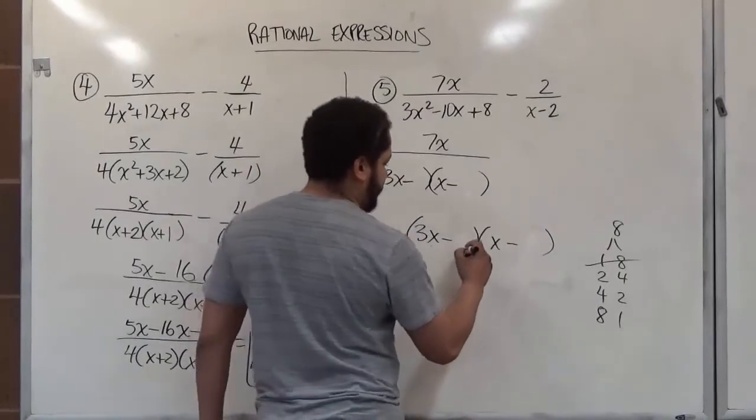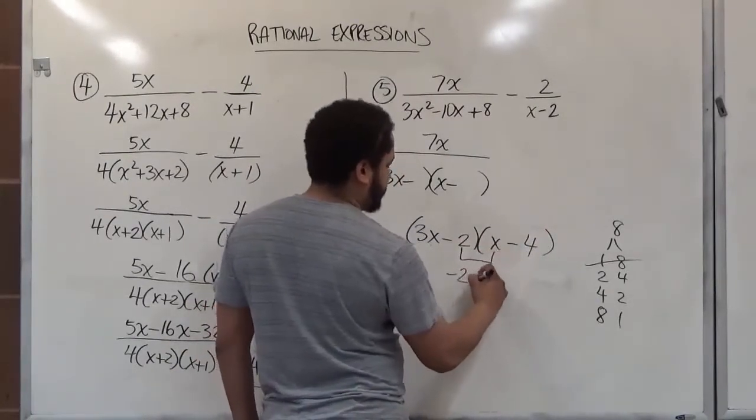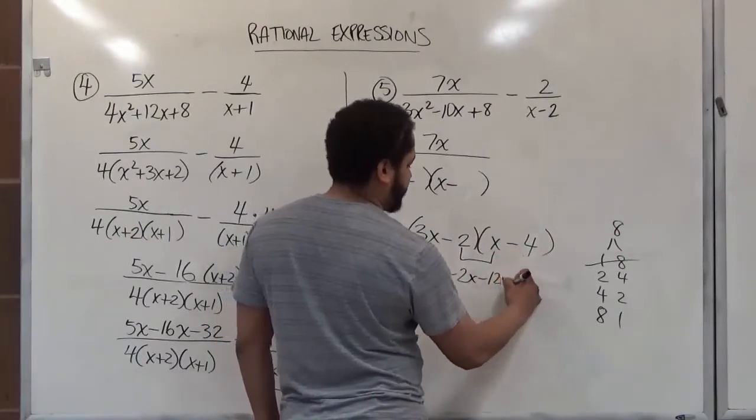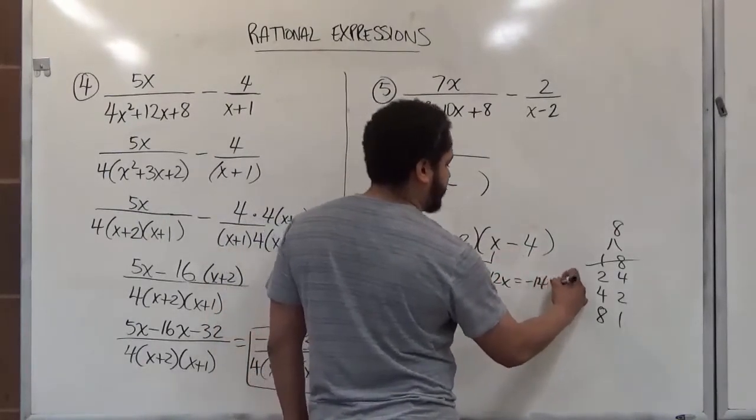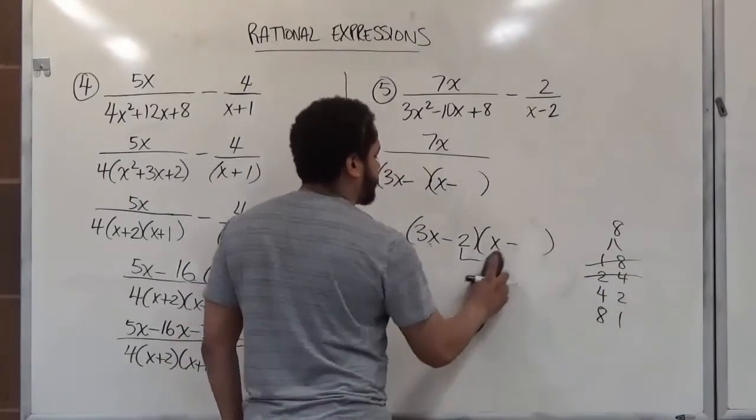2 and 4 now. With 2 and 4 we make negative 2x. 3 and negative 4 is negative 12x. This is negative 14x. Way too large, negative 14. So we're going to get rid of those 2 and 4.